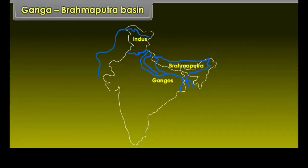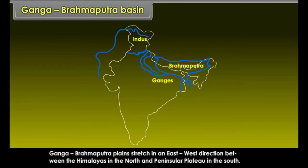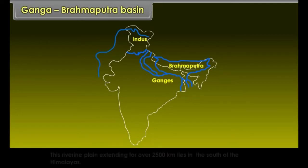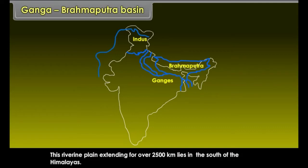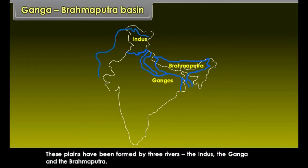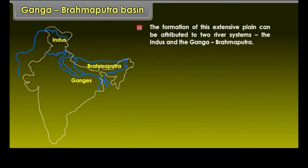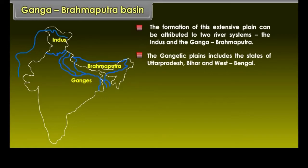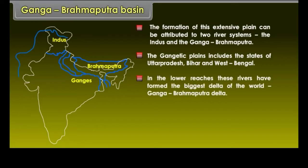The Ganga-Brahmaputra plains stretch in an east-west direction between the Himalayas in the north and the Peninsular Plateau in the south. This riverine plain, extending for over 2,500 km, lies to the south of the Himalayas. These plains have been formed by three rivers: the Indus, the Ganga, and the Brahmaputra. The Gangetic plains include the states of Uttar Pradesh, Bihar, and West Bengal. In the lower reaches, these rivers have formed the biggest delta in the world.